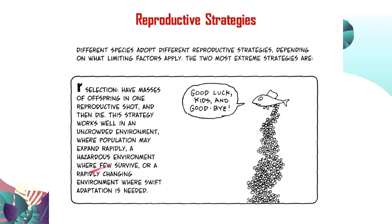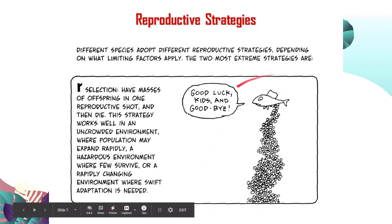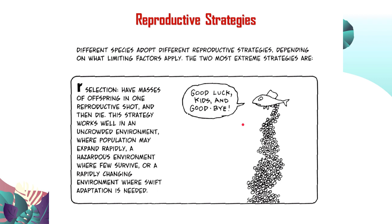R-selection also works in hazardous or rapidly changing environments where swift adaptation is needed. R-selection goes by numbers — it produces many offspring, but parents usually do not take care of them. The strategy is that even if half are eaten by a predator, the remaining half will hopefully reach adulthood. We'll talk more about R-selection as we go along.